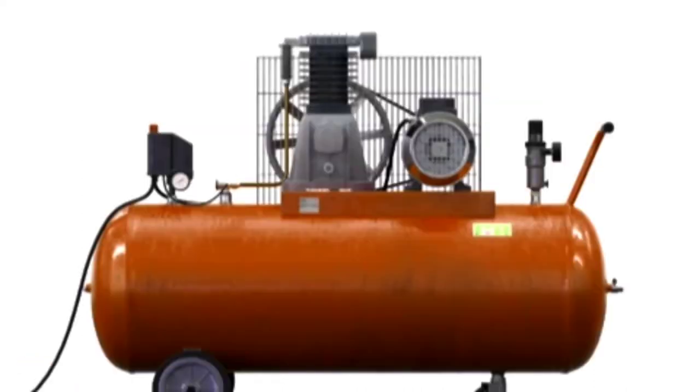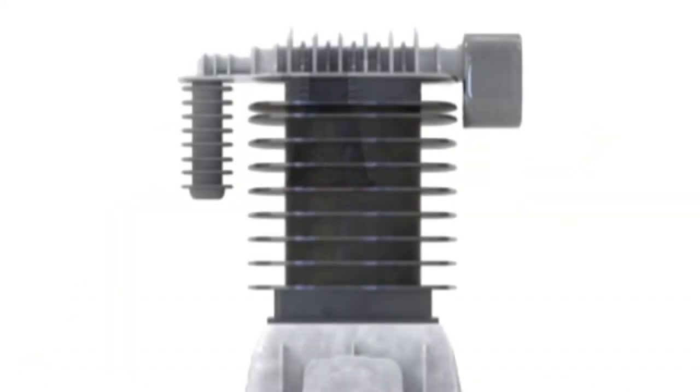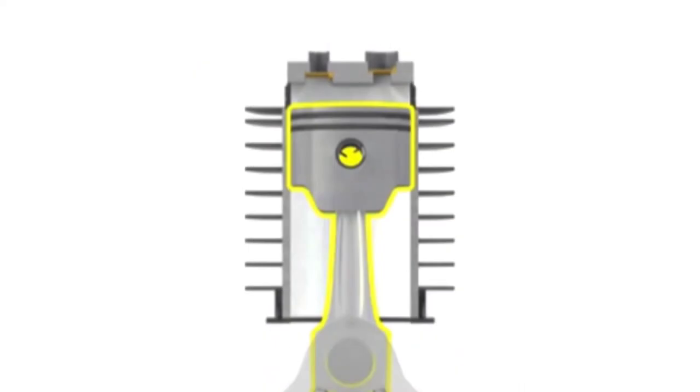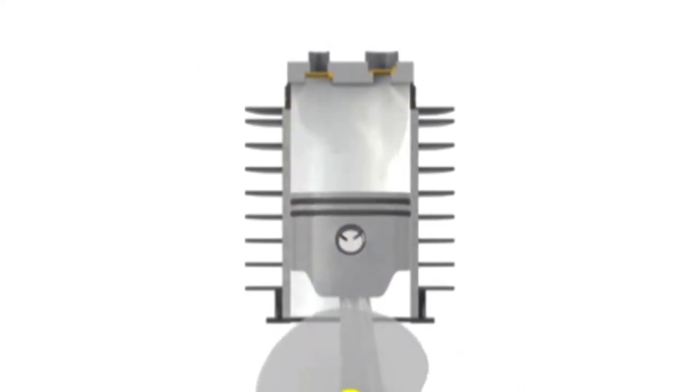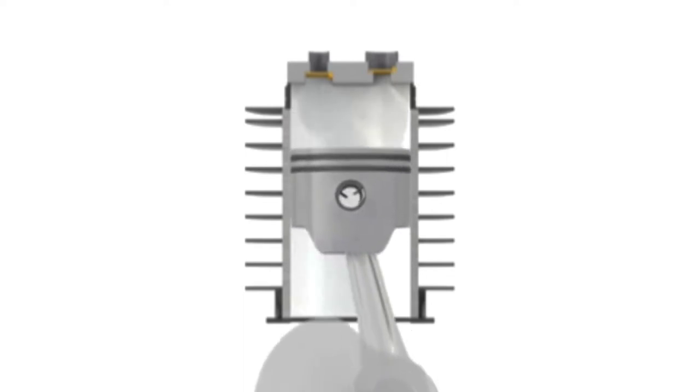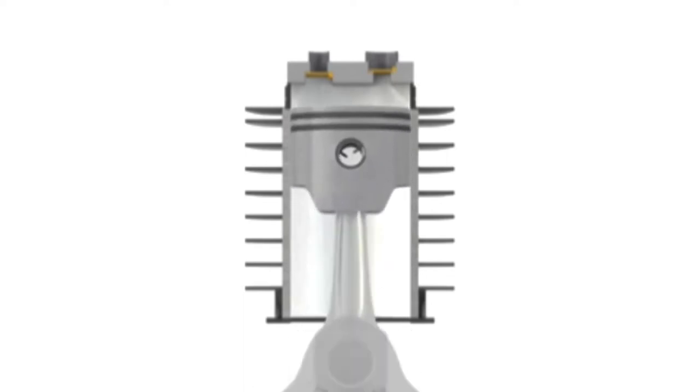A typical reciprocating compressor consists of a housing with an internal piston connected to a crankshaft. As the crankshaft turns, a piston reciprocates within the cylindrical housing. There are two valves at the head of the cylinder, an inlet and an outlet.